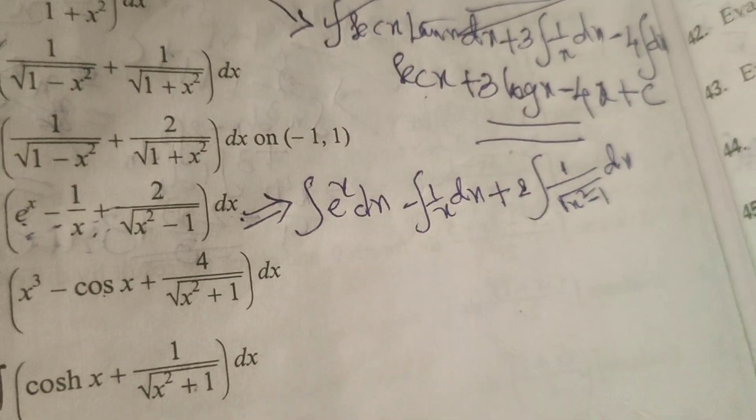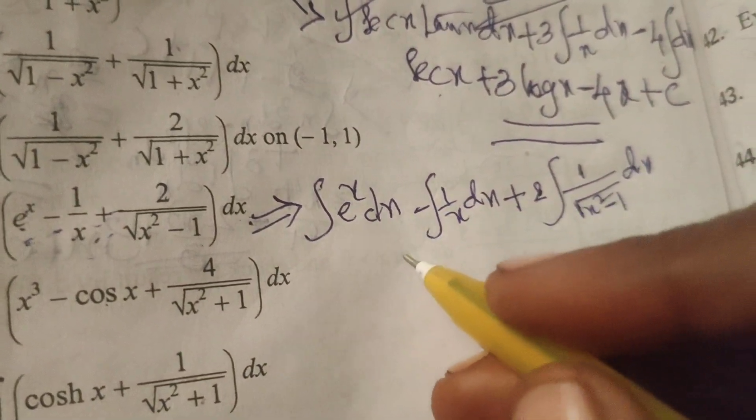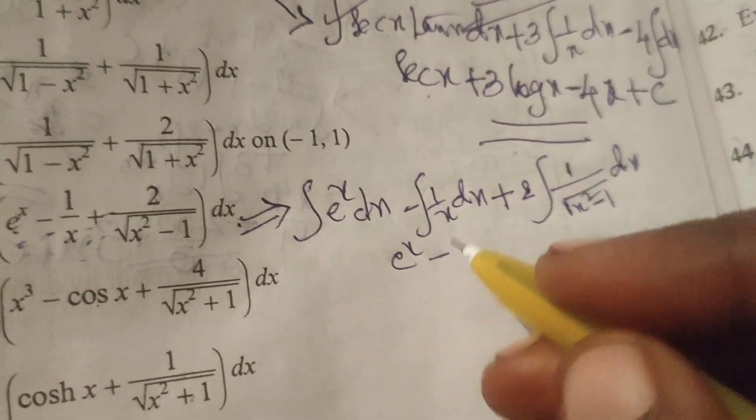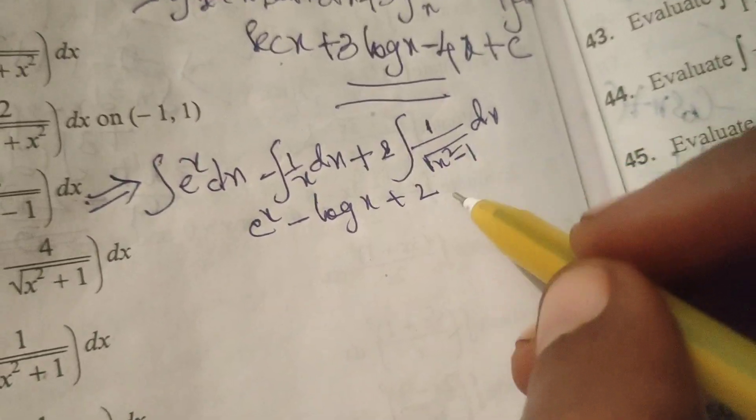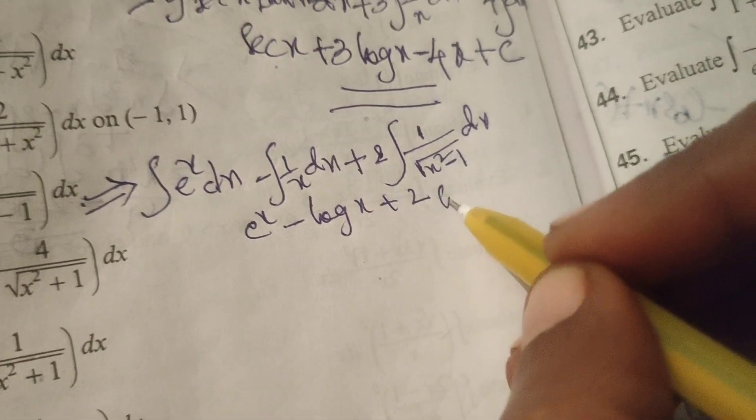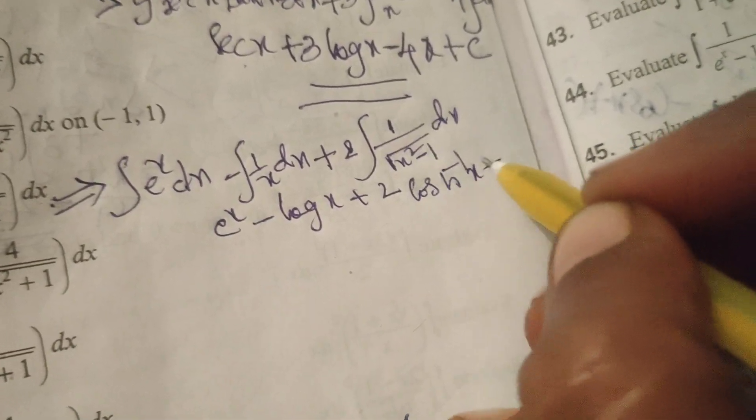Now integrate. Integral of e to the power x means e to the power x. Integral of 1 by x means log x, plus 2 into integral of 1 by root of x squared minus 1 means cosh inverse x after integrating.